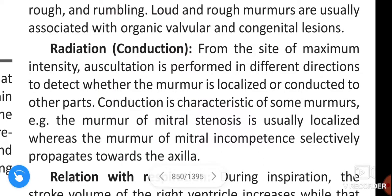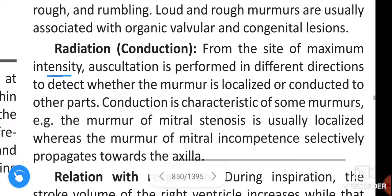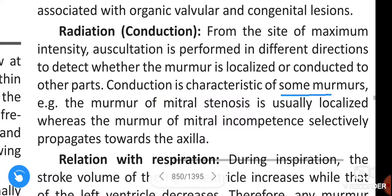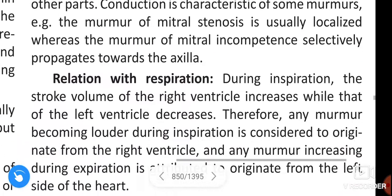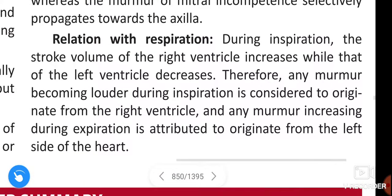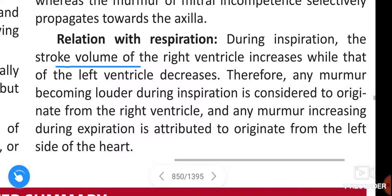Next is the radiation or conduction from the site of maximum intensity. Auscultation is performed in different directions to detect where the murmur is localized or conducted to other parts. For example, the murmur of mitral stenosis is usually localized, whereas the murmur of mitral incompetence selectively propagates towards the axilla.